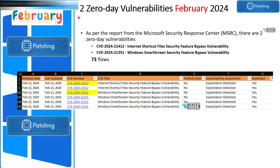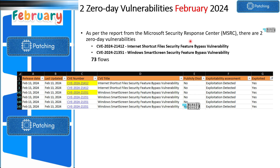Let's look at two zero-day vulnerabilities published by Microsoft for February Patch Tuesday 2024. As per the report from Microsoft Security Response Center, MSRC, there are two zero-day vulnerabilities: CVE-2024-21412, which is an Internet Shortcut Files Security Feature Bypass Vulnerability, and CVE-2024-21351, which is a Windows SmartScreen Security Feature Bypass Vulnerability. There are also 73 other flaws published by Microsoft on 13th February 2024 Patch Tuesday.